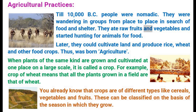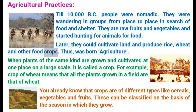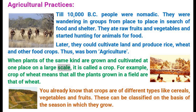They ate raw fruits and vegetables and started hunting animals for food. Later, they could cultivate land and produce rice, wheat and other food crops. Thus was born agriculture. When plants of the same kind are grown and cultivated at one place on a large scale, it is called a crop.